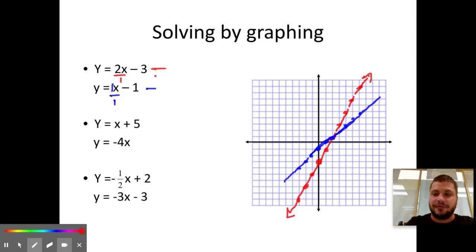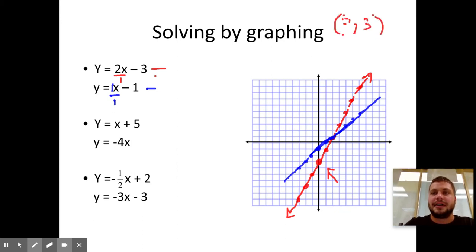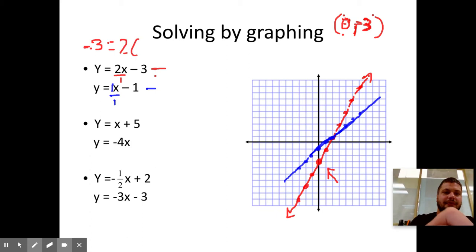Let's try one really fast. For instance, let's pick this point right here, which is the point zero comma negative three. Zero comma negative three is a point on the red line. Why is it on the red line? Because it makes the red equation true, meaning that when the y is negative three, three equals, sorry, it's zero negative three. So when the y is negative three, that is equal to two times x is zero minus three. And yes, two times zero, zero minus three is negative three. It makes the equation true. That's why it's on the red line.